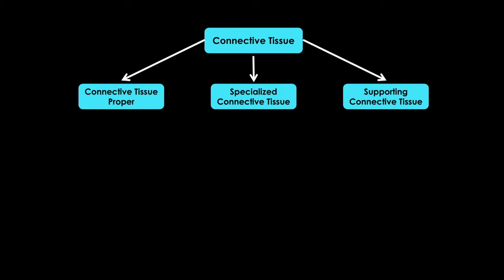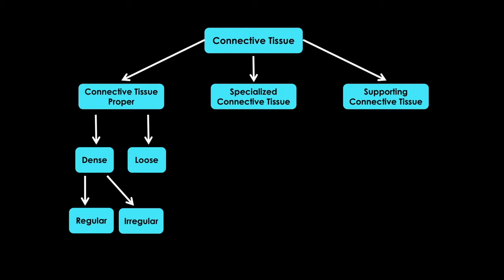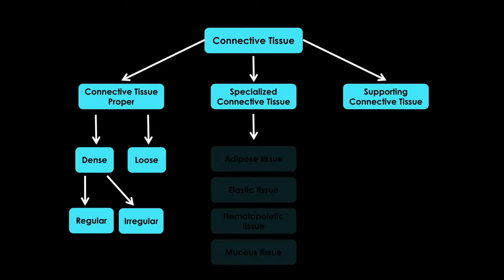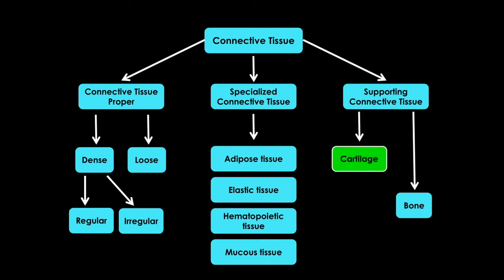So-called connective tissue proper, specialized connective tissue, and supporting connective tissue. Connective tissue proper is further subdivided into loose and dense connective tissues, and dense connective tissue is further subdivided into dense irregular connective tissue and dense regular connective tissue. We have the specialized connective tissues: adipose, elastic, hematopoietic, and mucus. And finally, we have the structural connective tissues, which consist of bone and the tissue we'll discuss today, cartilage. If you want to learn more about the other types of connective tissues, you can check out my tutorials on connective tissue proper, hematopoiesis, and bone.